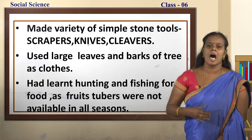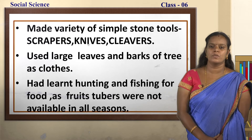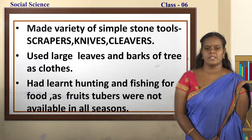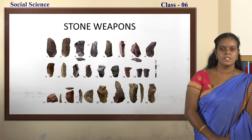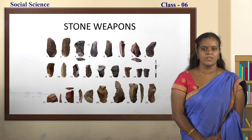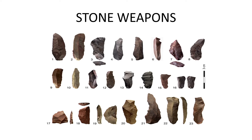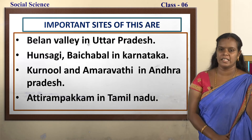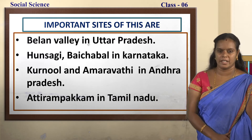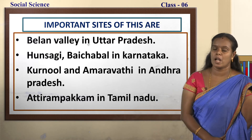They had learned hunting and fishing for food, as fruits and tubers were not available in all seasons. Look at this picture — see how the man of old stone age is hunting animals with the help of stones. We can also see a variety of stone weapons used by the old stone age man. Important sites of Paleolithic age are Balan Valley in Uttar Pradesh, Hunsagi, Baichappal in Karnataka, Kurnool and Amaravati in Andhra Pradesh, and Atirampakkam in Tamil Nadu.